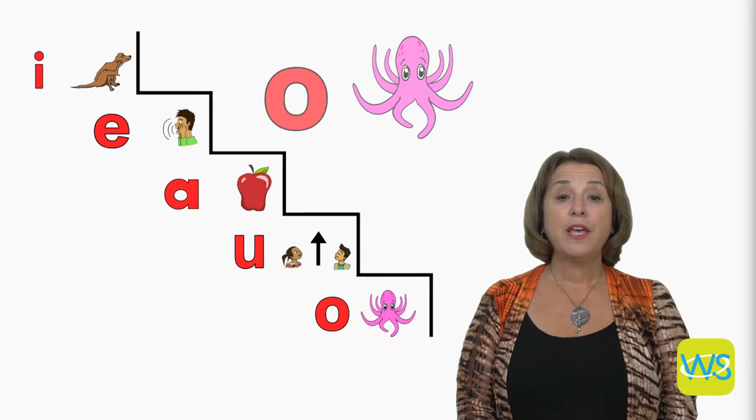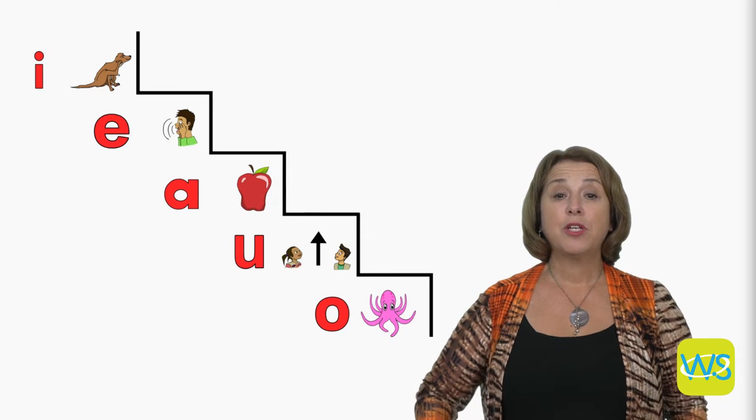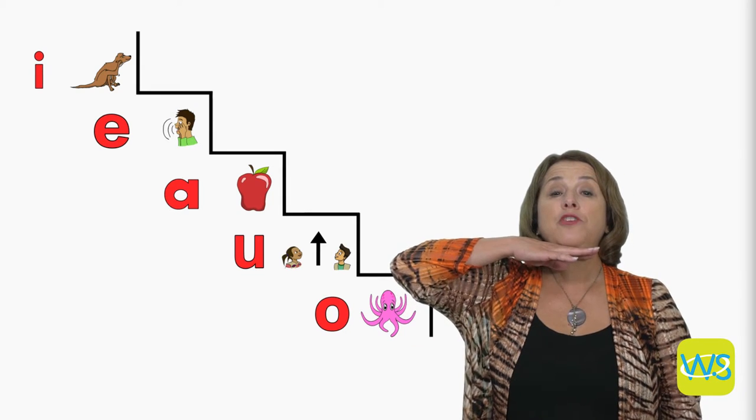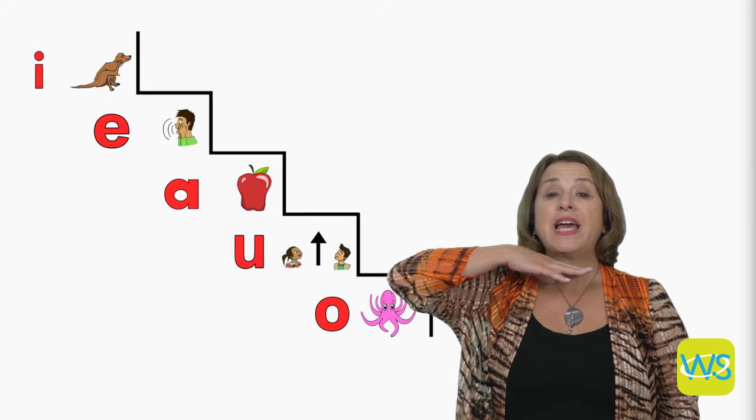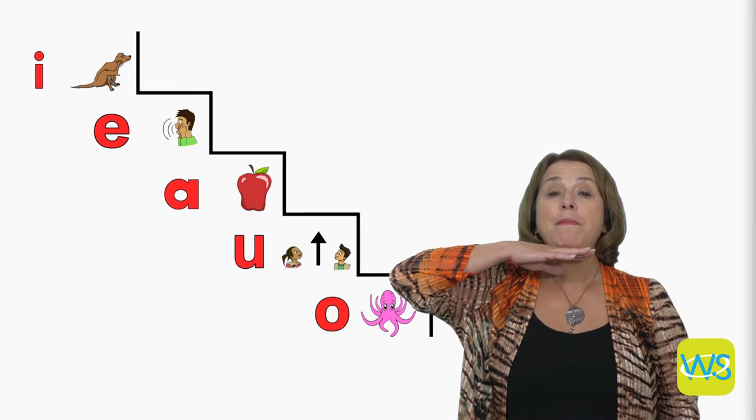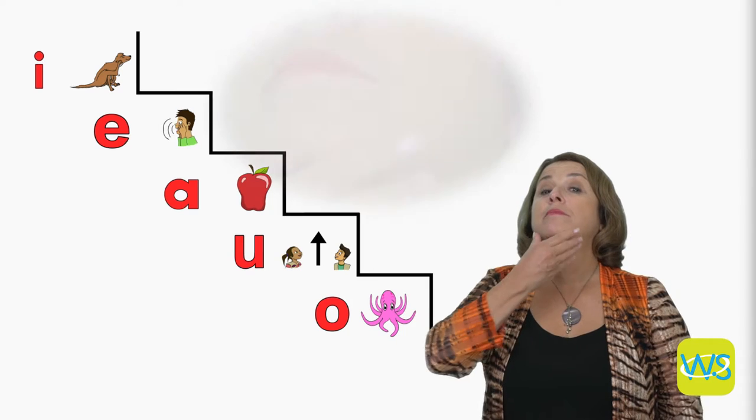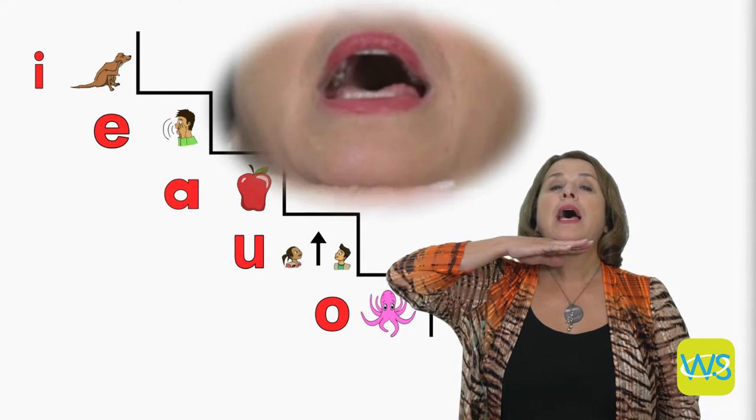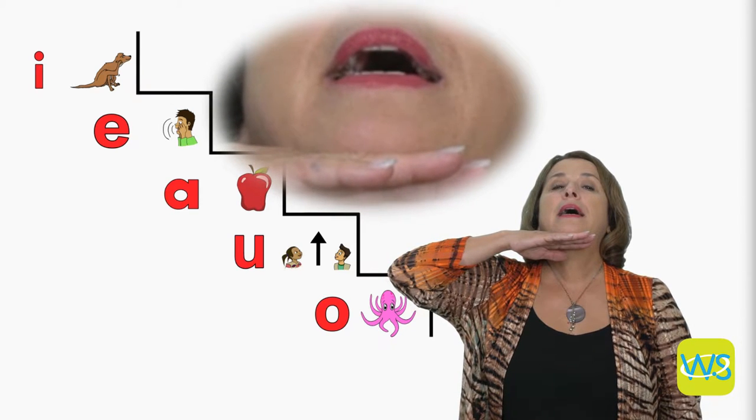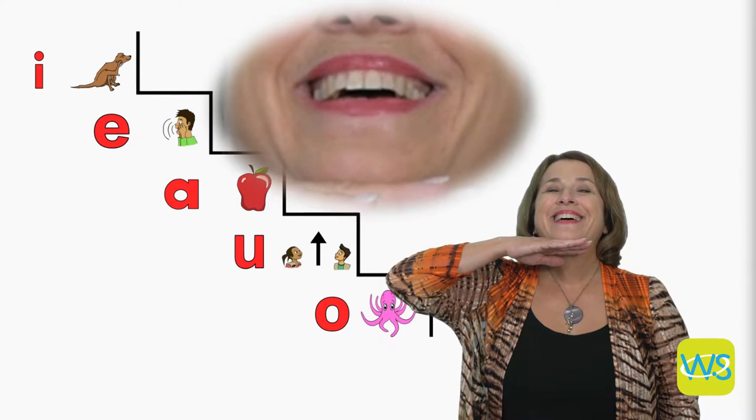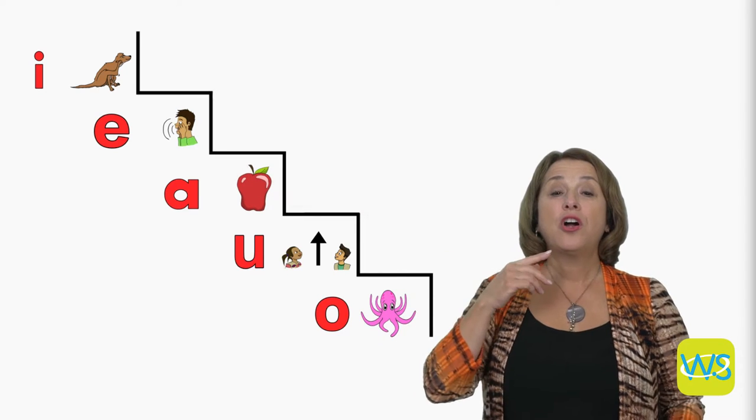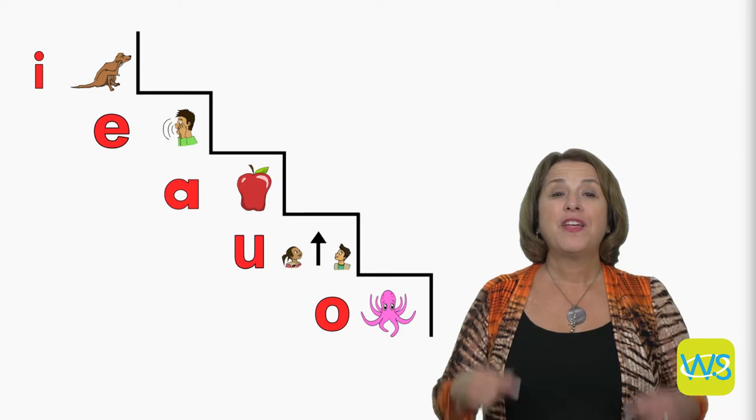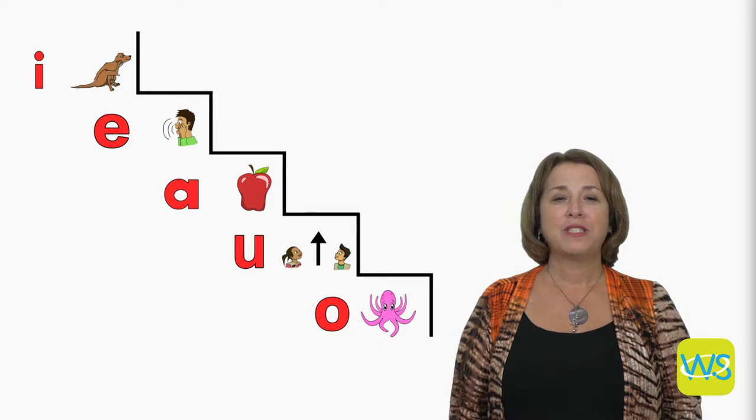Watch me go up and down the staircase. I'm going to start at the bottom with AH. I'm putting my hand under my chin and I'm going to say each sound. Watch my mouth and my jaw. AH, AH, AH, EH, IH. When I started with AH, my mouth was wide open. When I ended with IH, my mouth was smiling.